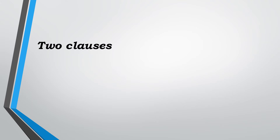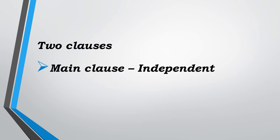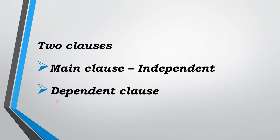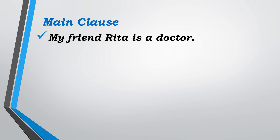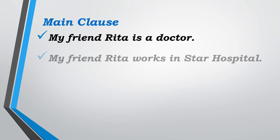With the given examples, I'm going to introduce two types of clauses. The first clause is the main clause, also known as the independent clause. The second clause is the dependent clause. With the given example, let's discuss about the main clause.